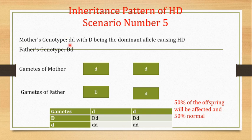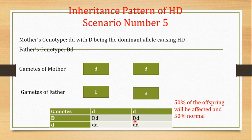Scenario number five: the mother is normal and the father has Huntington's disease, but the father is in the heterozygous condition. The mother's gametes will all be small d. The father's gametes will be of two types: 50% capital D and 50% small d. When crossed, 50% of the offspring will be affected because they carry the capital D allele, and 50% of the offspring will be normal. So if the father is heterozygous and the mother is normal, 50% of offspring will be normal.